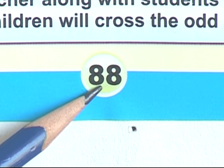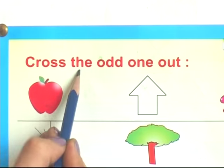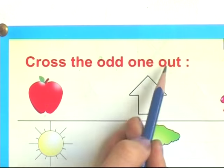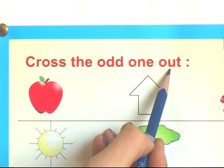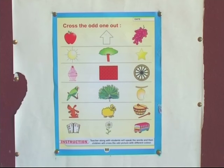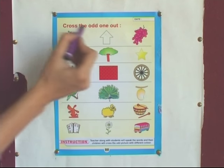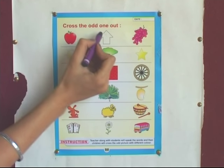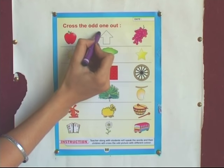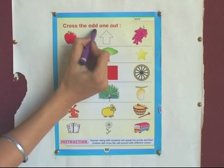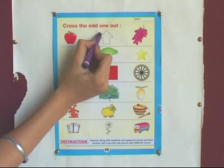Page 88. Cross the odd one out. Here, we will do the picture reading and the picture with a different sound will be crossed out.